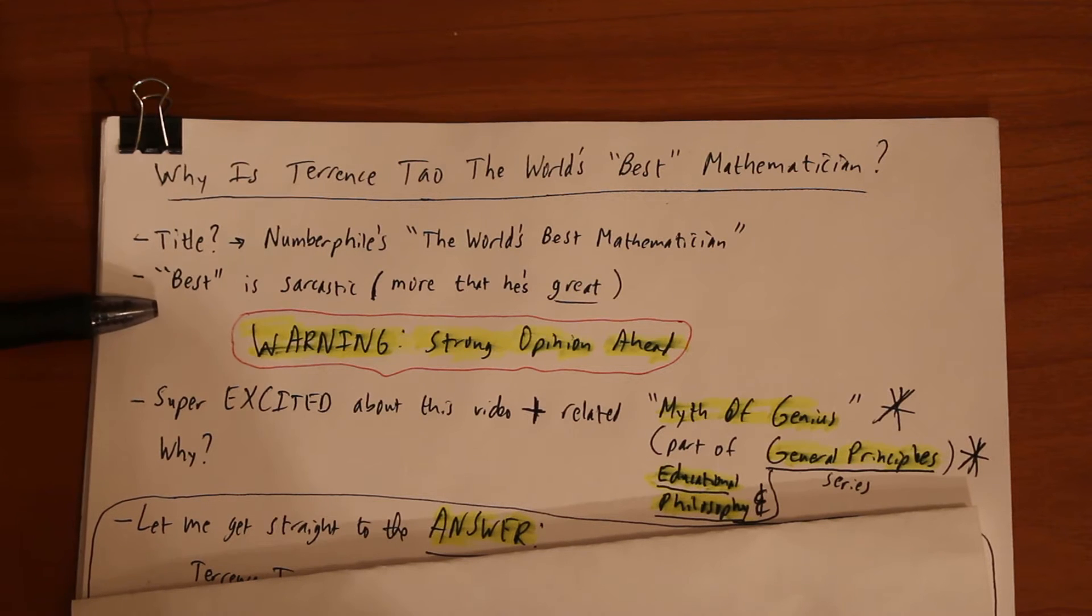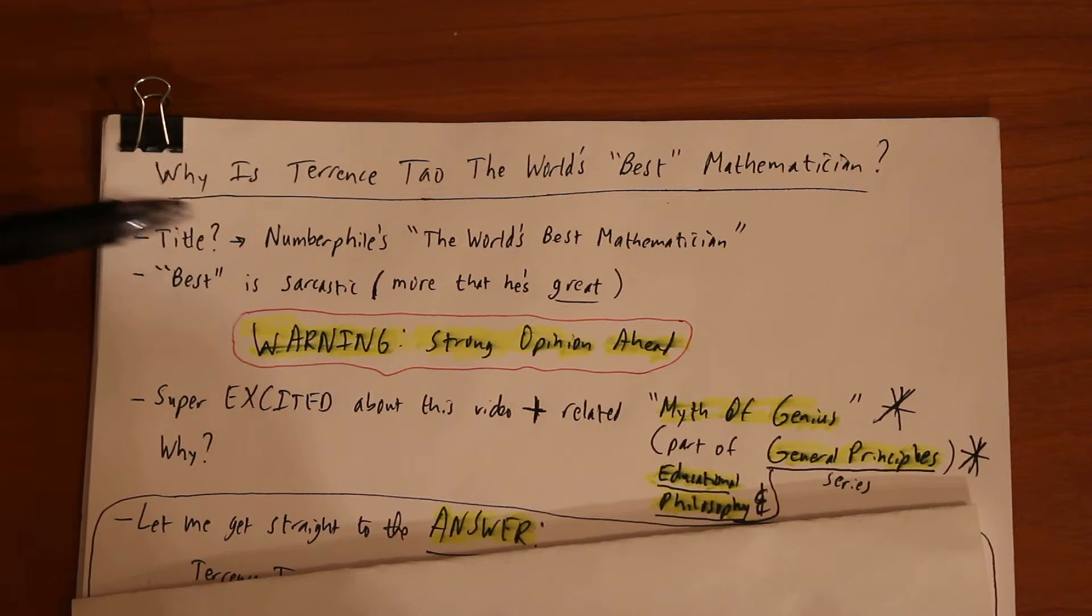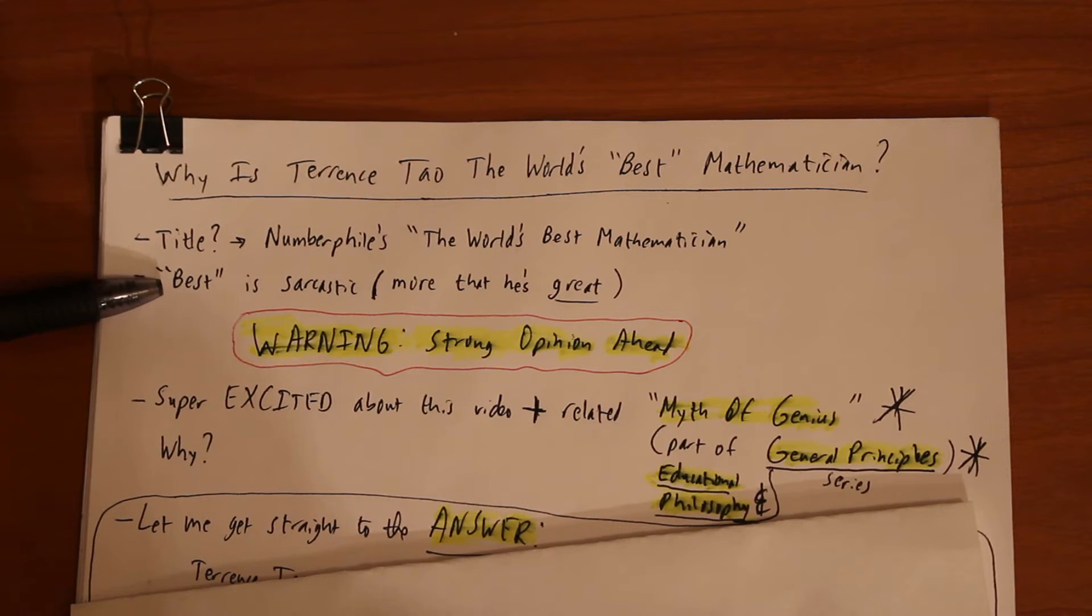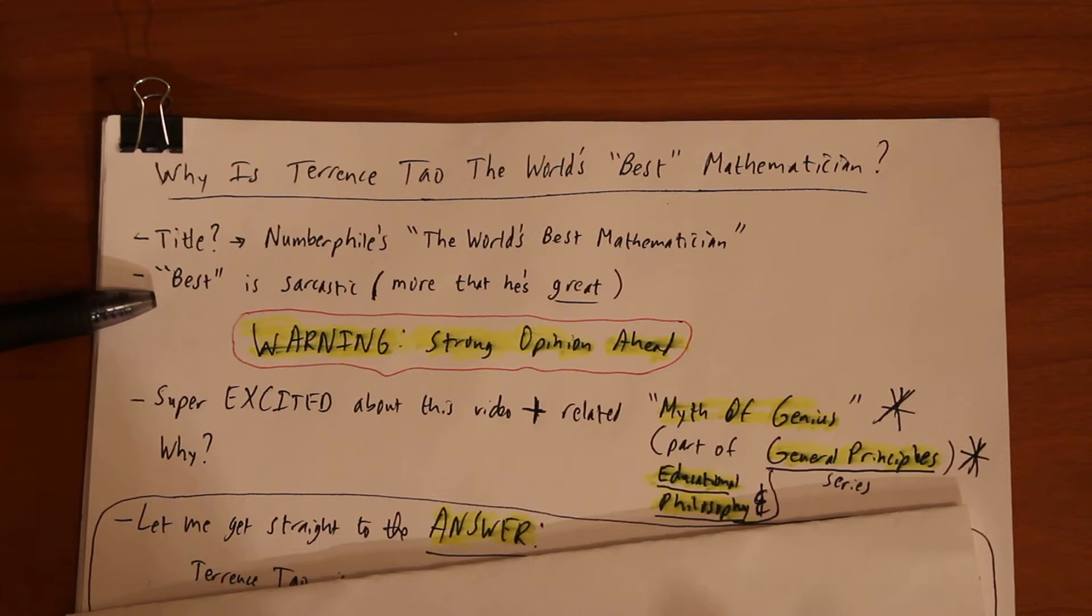I use the term 'best' sarcastically because he used it on that channel and there is some merit to that, but don't take it too seriously. I don't really believe it makes sense to rate mathematicians at the highest levels of like who's number one and who's number two. The way I want to use it in a genuine way is just to mean that he's great. We're not comparing him against any other person.